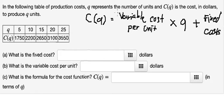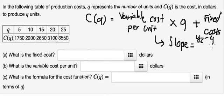So if we want to find variable cost per unit, we need to find the slope. The formula of the slope is y2 minus y1 over x2 minus x1.